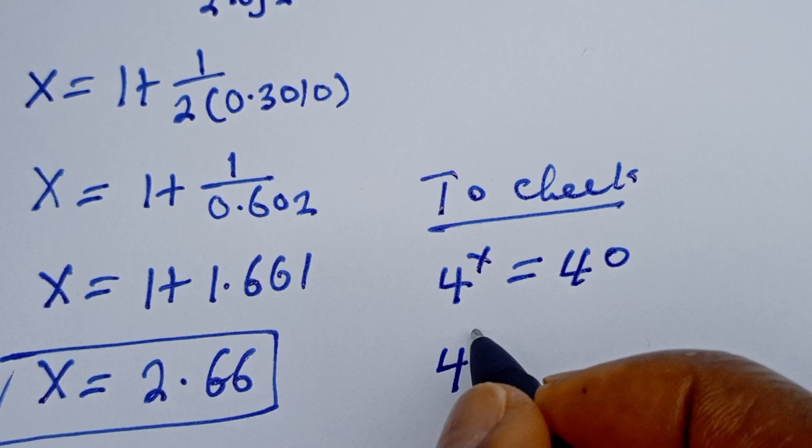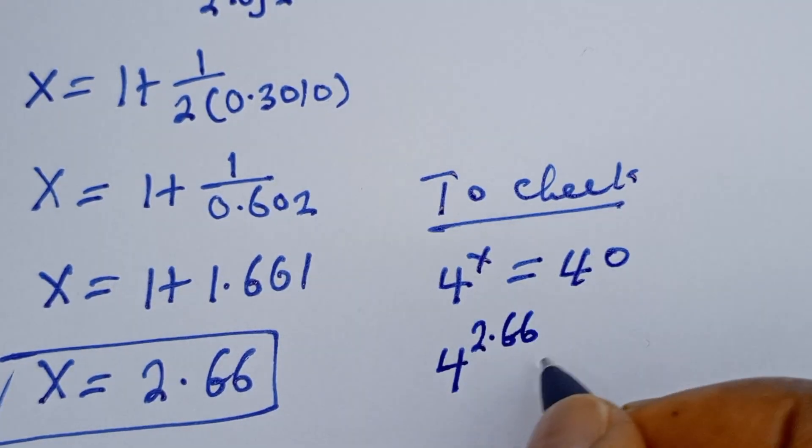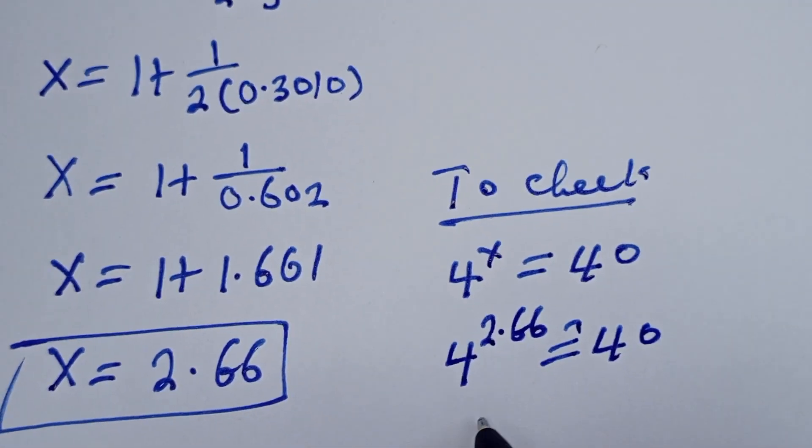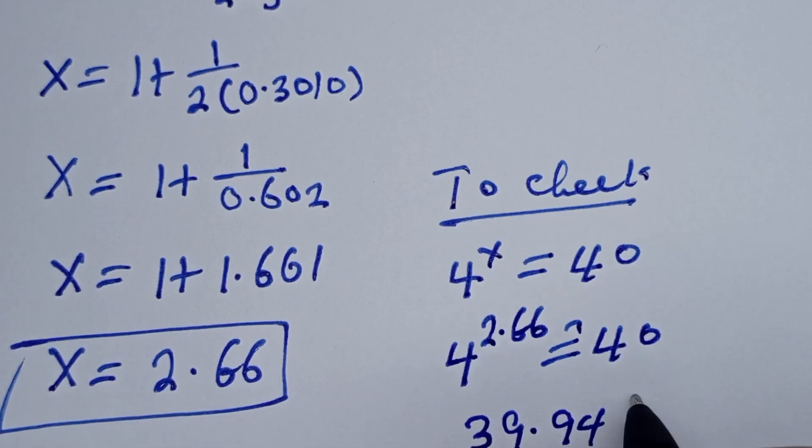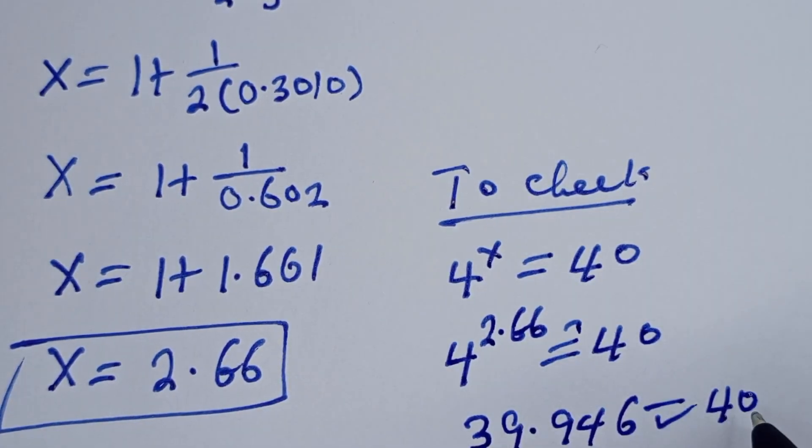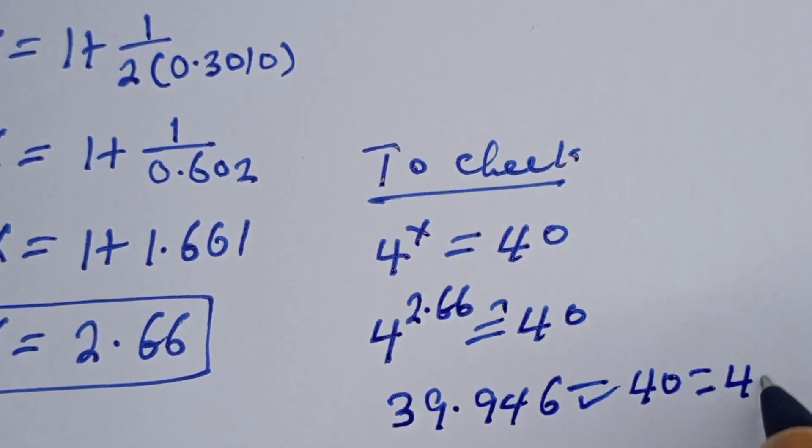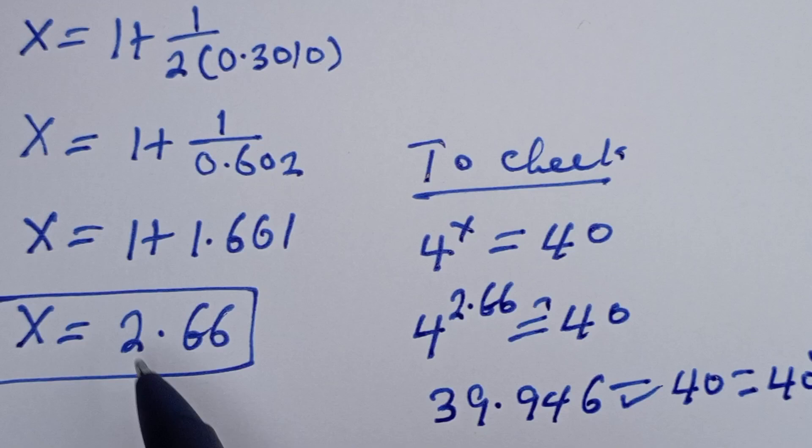we have 4 to the power of 2.66 must be equal to 40. Then 4 to the power of 2.66 is 39.946, which is approximately 40, is equal to 40, which is true at x is equal to 2.66.